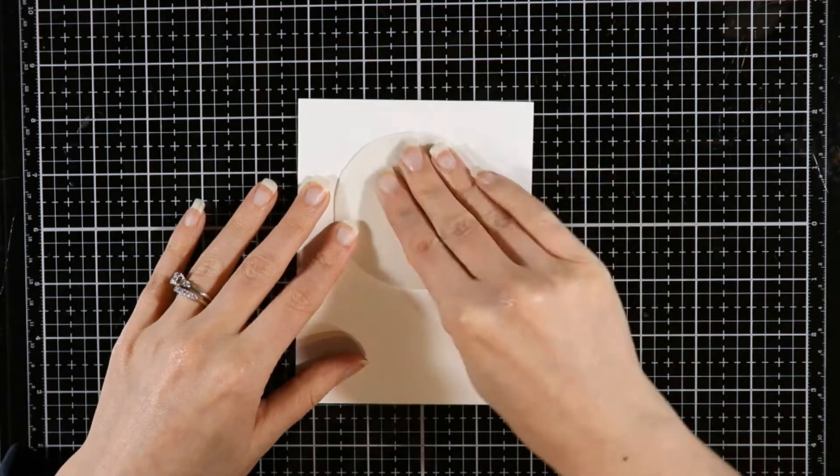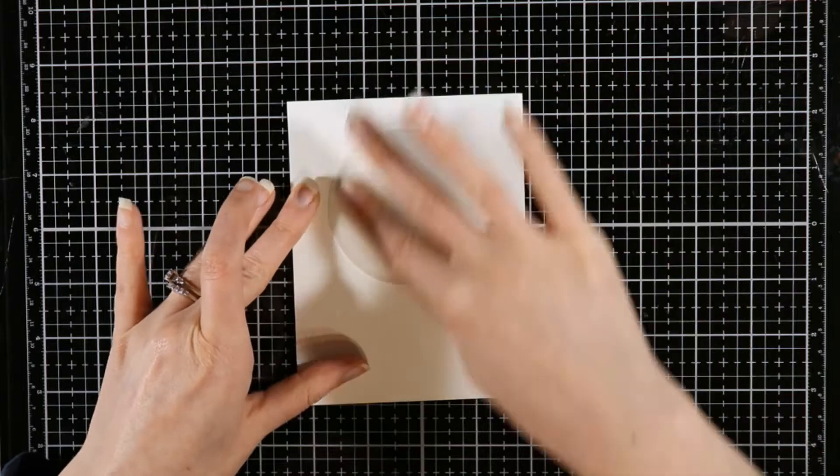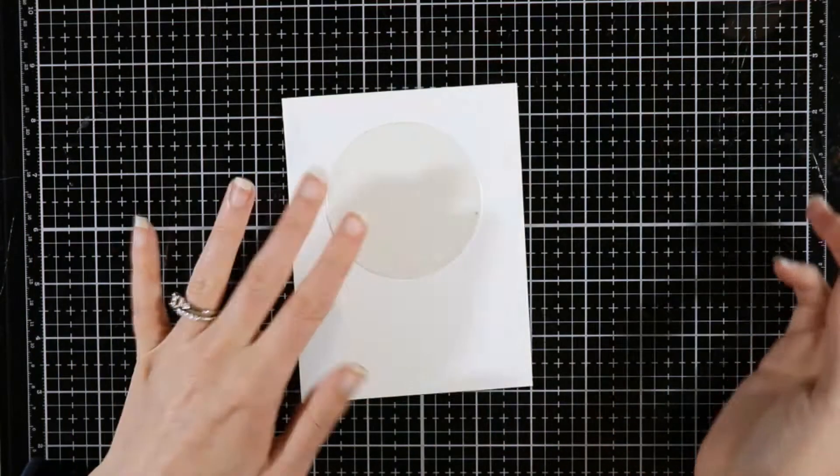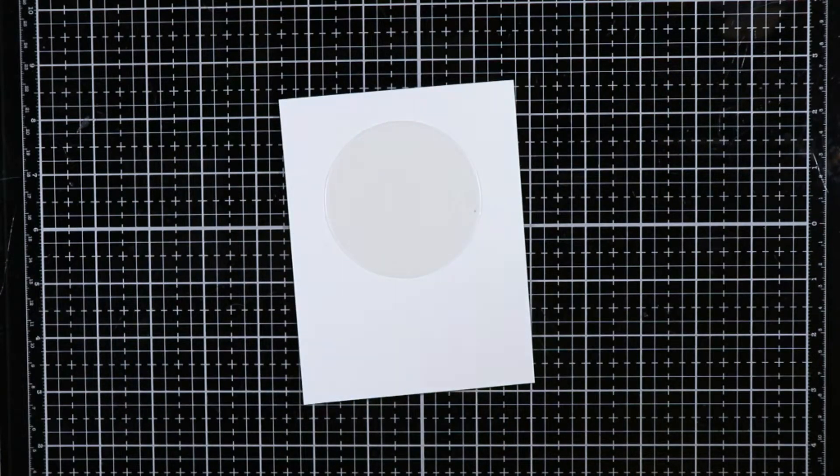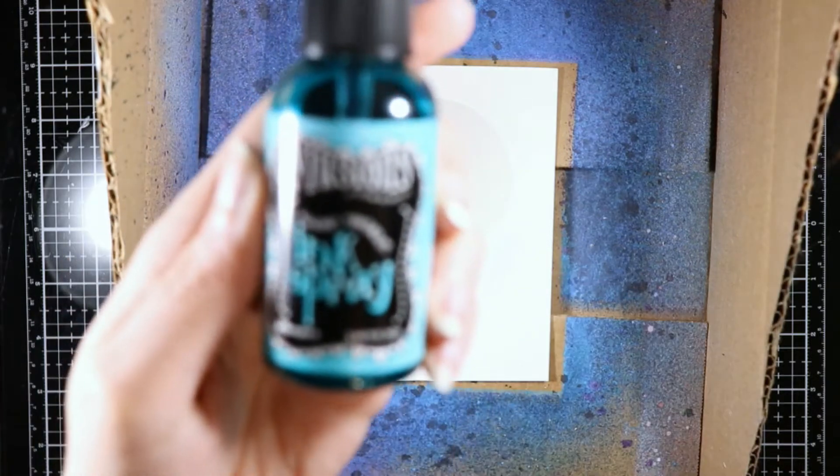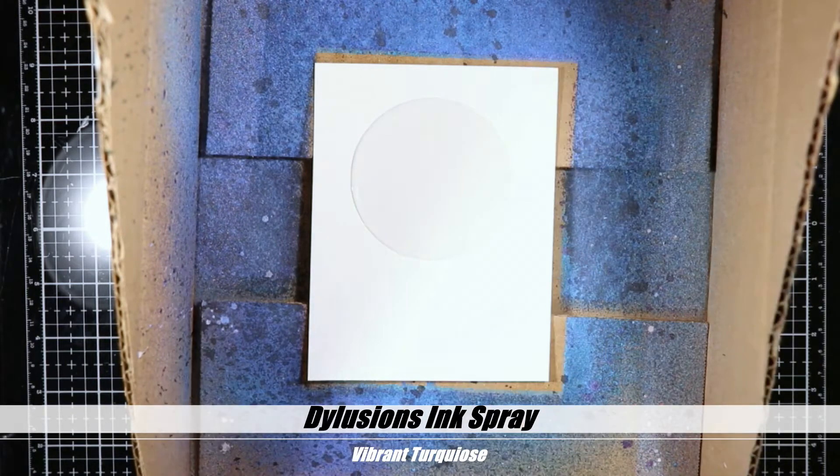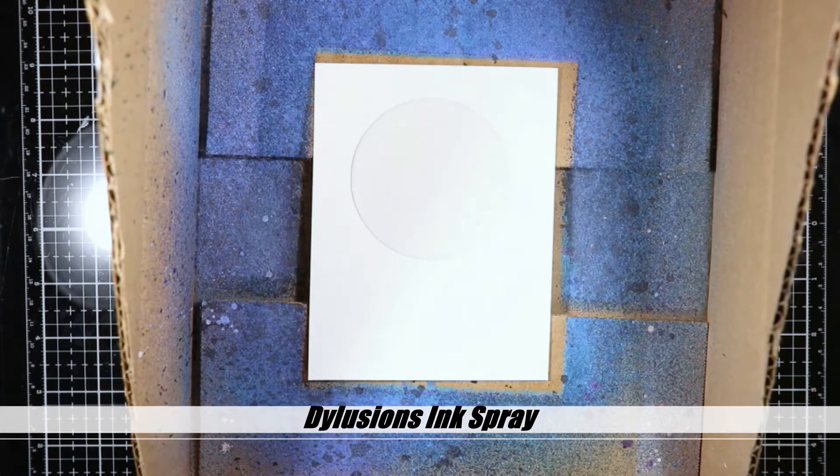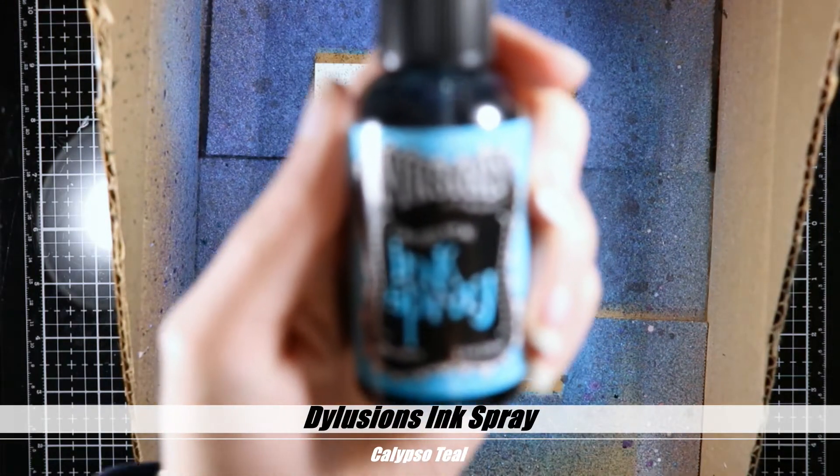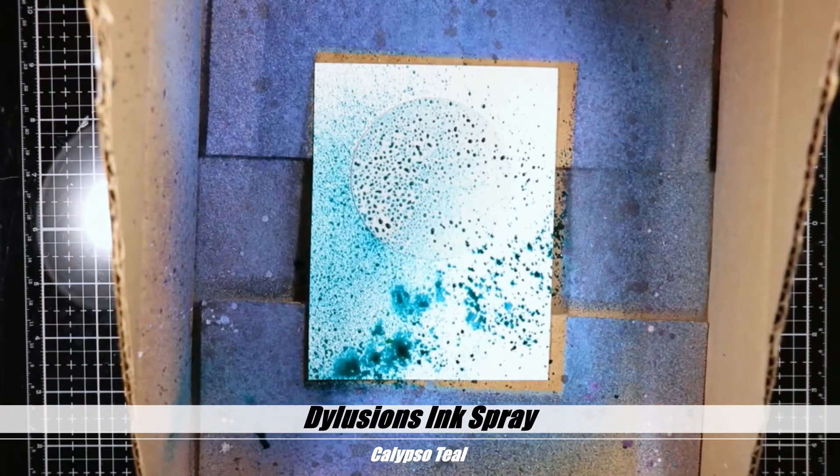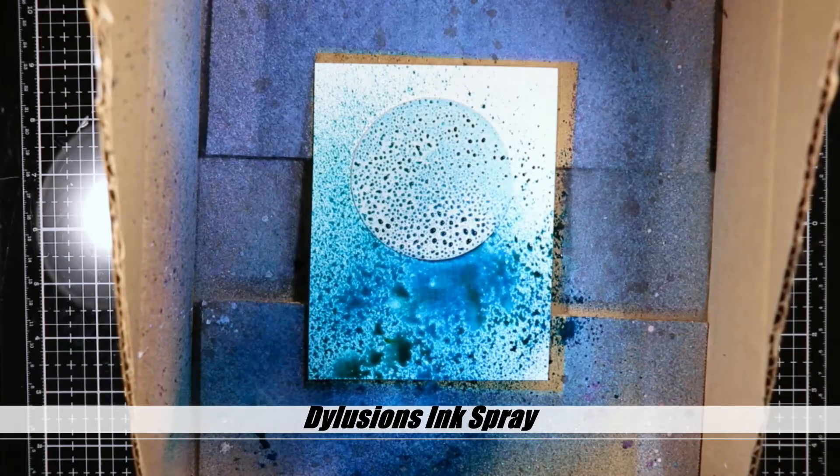I'm starting off with a circle mask that I cut from some thin stencil material using a circle die. I'm going to put them in my spray box here. Sorry it's dark, but I moved my lights so now it won't be dark. We're going to start off with some vibrant turquoise. I'm using dilutions spray inks and I'm just going to spray my watercolor paper with some water before we get started, and then spray the ink on.